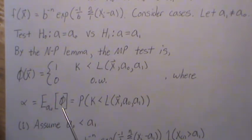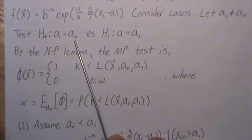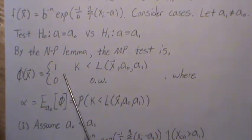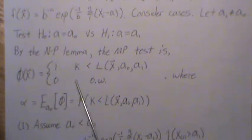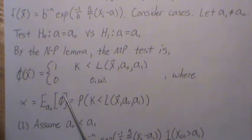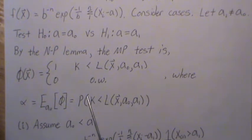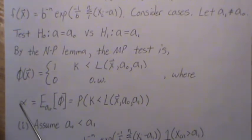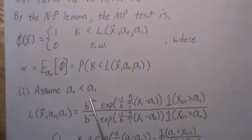Alpha is equal to the expected value of our test function under the null hypothesis that A is A-naught. Since this involves a discrete random variable, it's the value times the probability of that value occurring — so really it's just that probability — and we can find a k such that it equals alpha. Now let's assume that A1 is greater than A-naught.